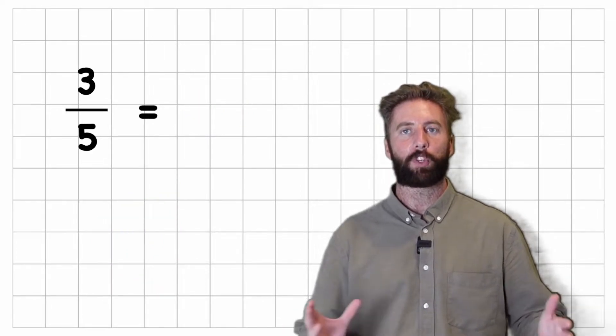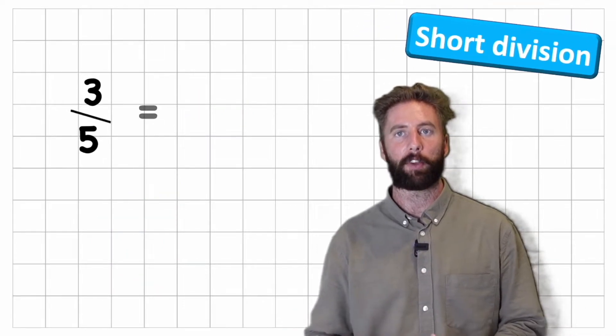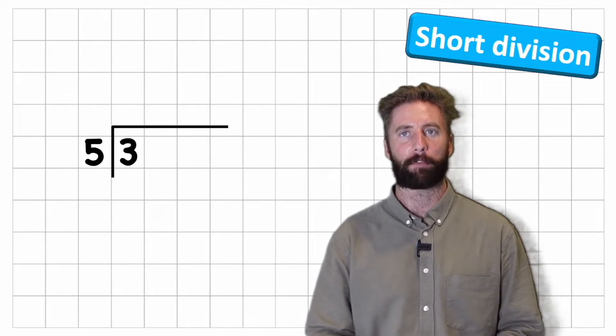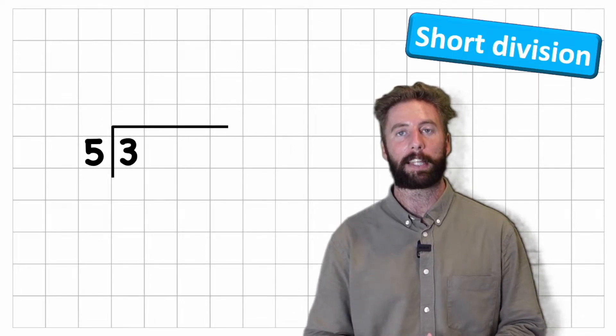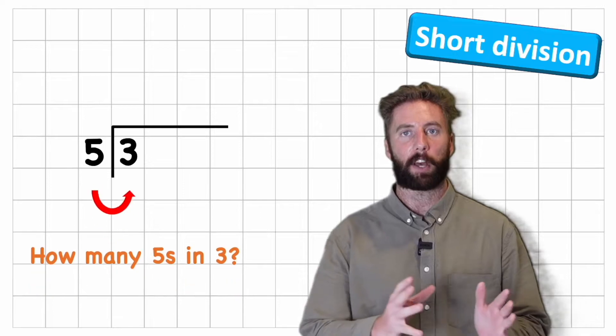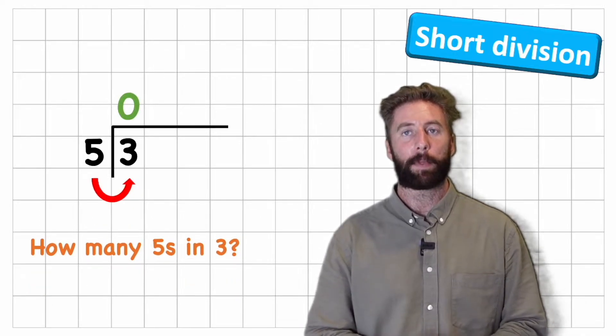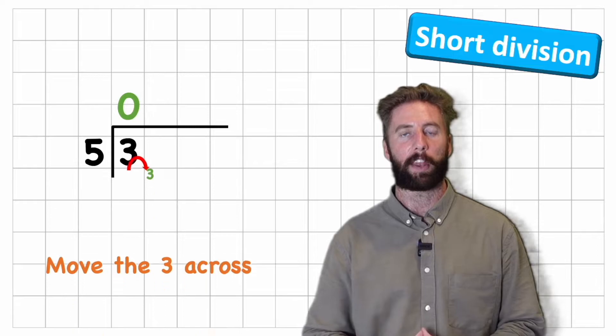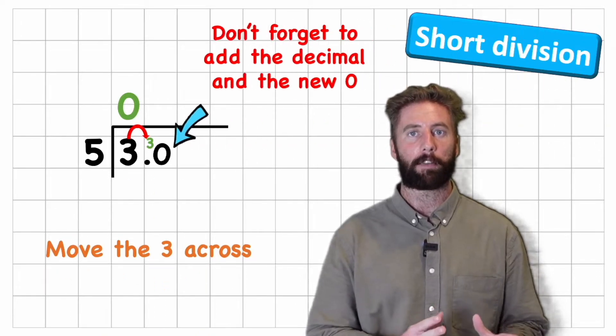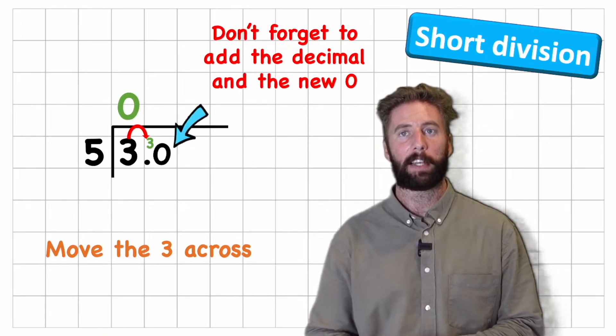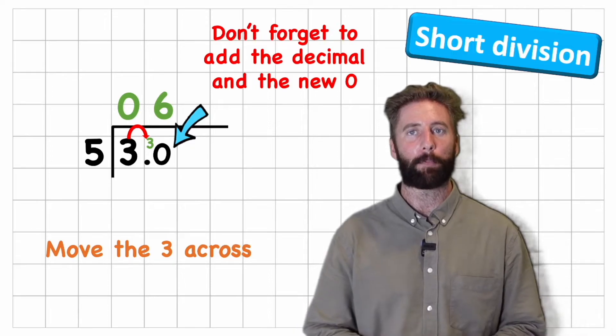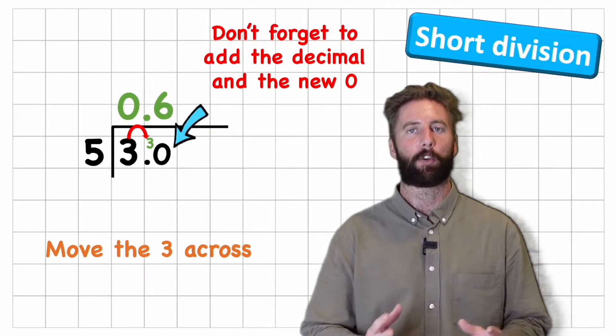Let's look at the same question with short division method. So I can have my 3 divided by 5 just like before but this time I'm going to look at it slightly differently. I'm going to say how many fives are there in 3? 0. Correct. But this time I have to roll my 3 across to the next column and I can ask myself how many fives are there in 30? 6. Great. Put back my decimal point and I get the same answer 0.6.